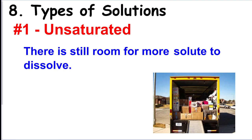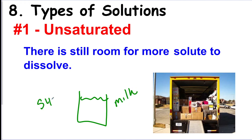There are also three types of solutions depending on how much solute you dissolve. Take chocolate milk as an example — the milk is the solvent and the syrup is the solute. If you only put a little syrup in the milk, you can still add more, so we call that unsaturated — there's still room for more solute to be added.